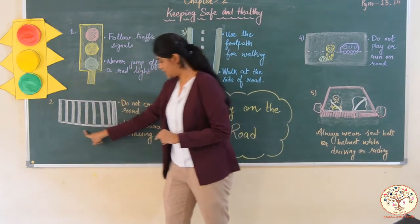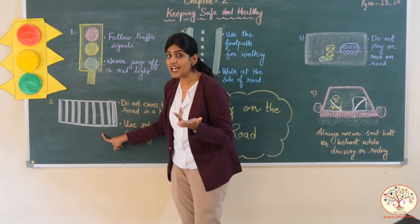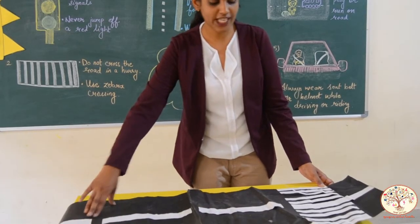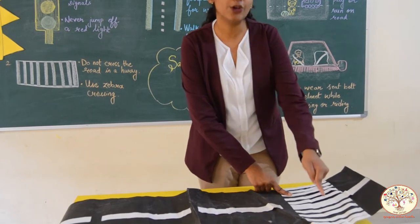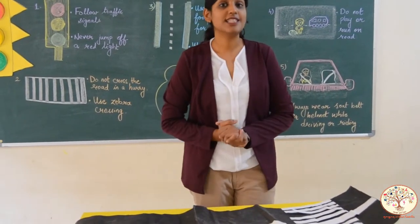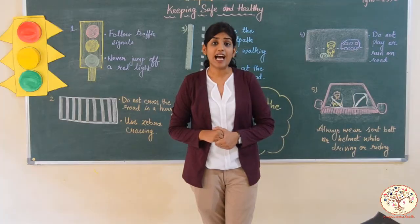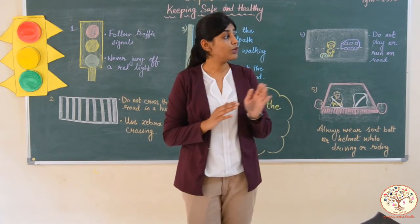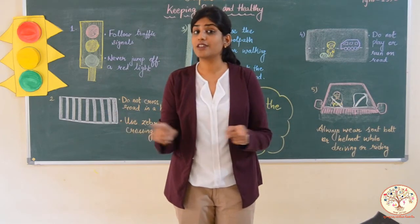Now let's see the next picture. What can you see in this picture? It is a zebra crossing. This is a road and this is a zebra crossing. When do we use zebra crossing? When we are crossing the road. We should never cross the road in a hurry, otherwise some accident may happen. So we should use zebra crossing to cross the road. While crossing, we should first look to the right, then look to the left, then again right, and cross the road only if there are no vehicles.